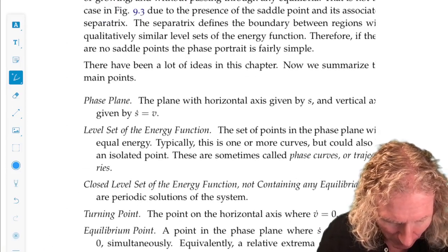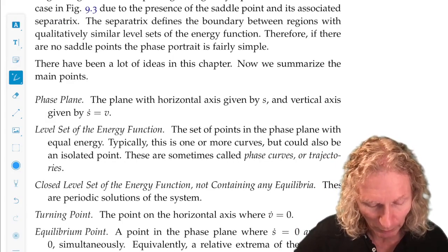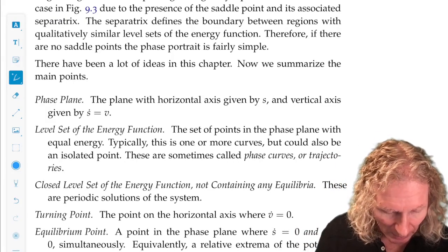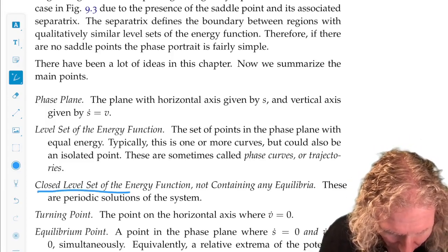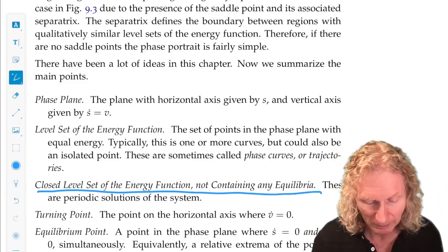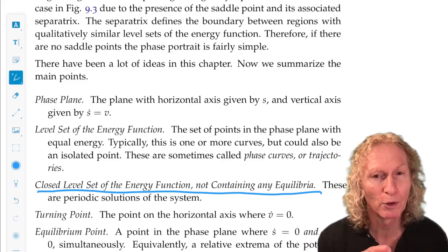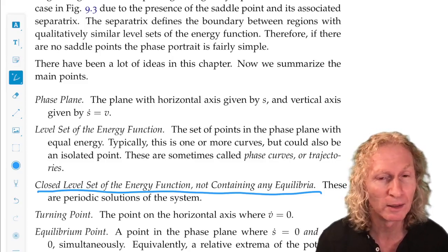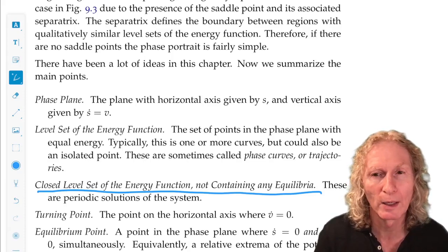And then we have some terminology at the end of the chapter. So the phase plane, I've defined what this is. Level sets of the energy function, clear enough. Closed level sets of the energy function not containing any equilibria, these are periodic solutions, because if we start on them, the vector field is tangent, and there are no equilibria on it, so the trajectory goes round and round.